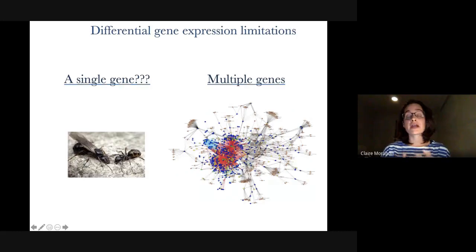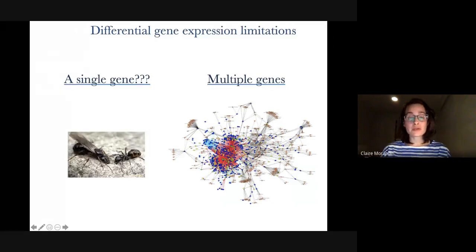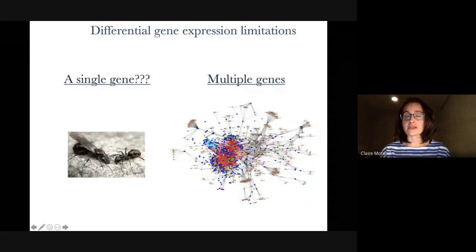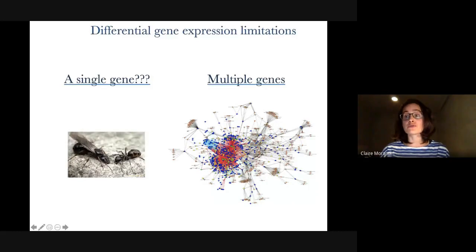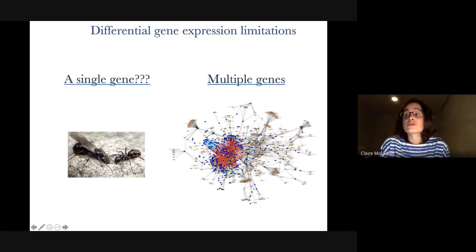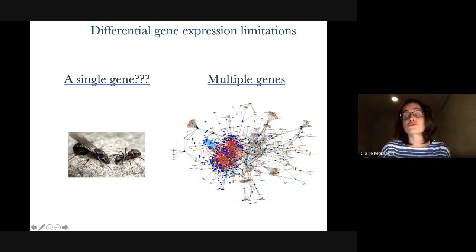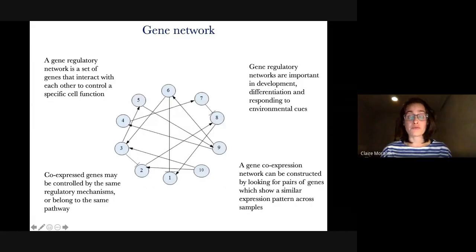When we look for caste-specific gene expression, we look for single genes that are overexpressed in one of the castes. But can we really see at the level of single genes what is really happening? In some cases one or a handful of genes are responsible for complex phenotypic traits. But in practice, many of these traits are complex, highly responsive to the environment, and are results of the combined expression of thousands of genes working together. Complicated traits are often controlled by networks of genes interacting with each other. So why don't we just look at networks directly, rather than looking for differentially expressed genes? Now we have the tools to do that.